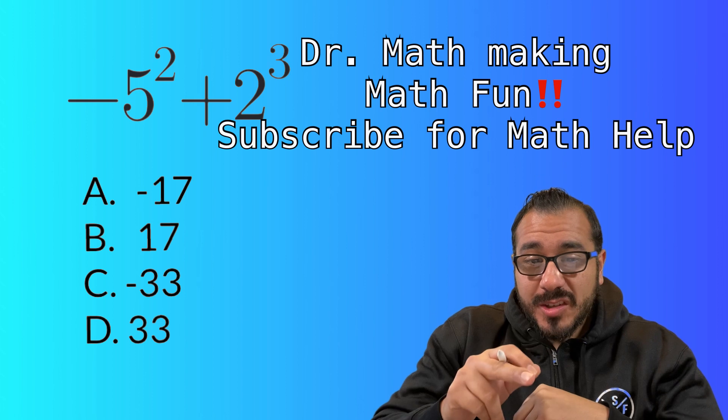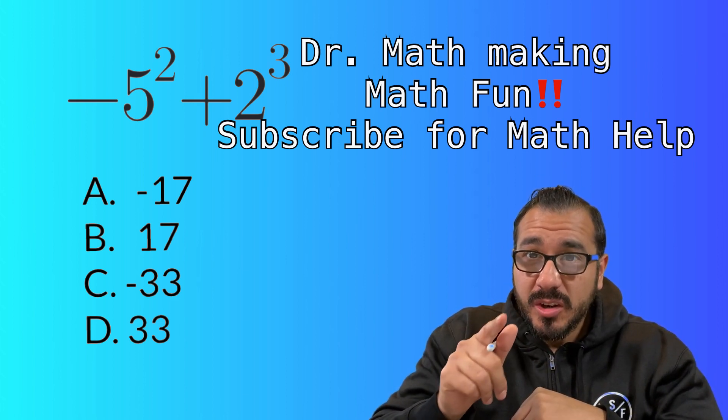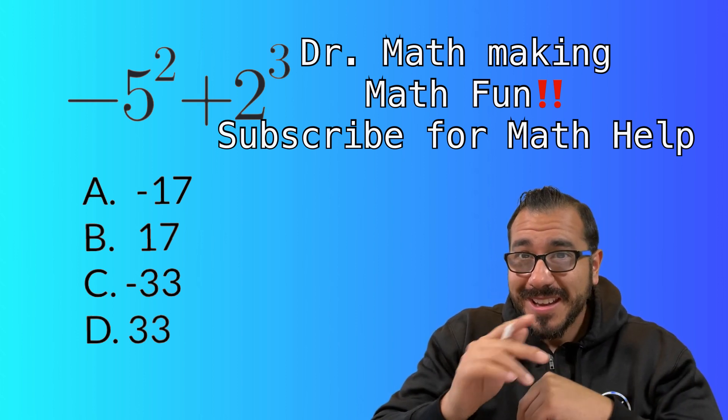So we got negative five squared plus two cubed. So go ahead. If you think you know how to do this, press pause and you'll check your answer with ours in a few minutes.